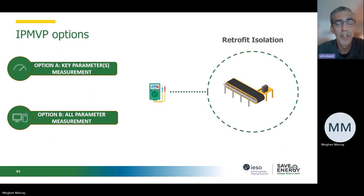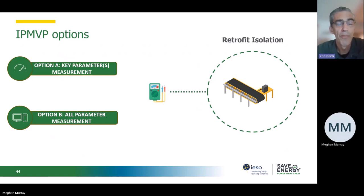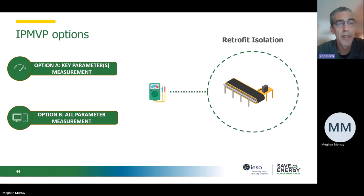With the IPMVP, the options are literally A, B, C, or D. When I started doing M&V about ten years ago, it was like another language — people say 'I did an option A' or 'I did an option C' and assume you know what they mean. Options A and B are retrofit isolation methods. Option A is where you consider all critical parameters and measure some of the key ones. Option B is more robust, more accurate, and more costly — you isolate the system as far as the measurement boundary, and the M&V professional identifies all critical parameters and measures all of them.